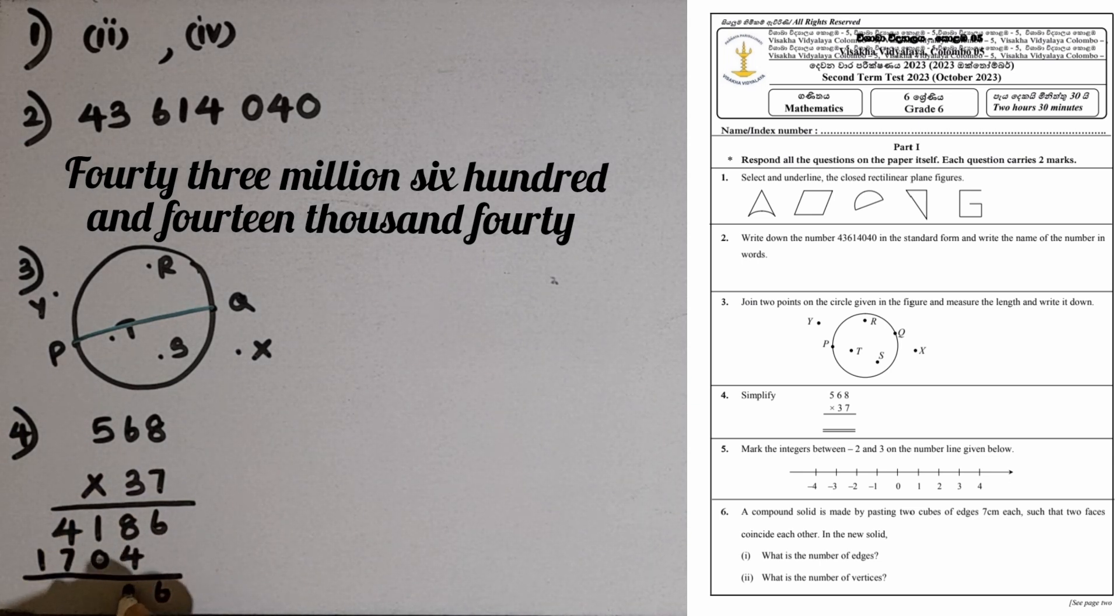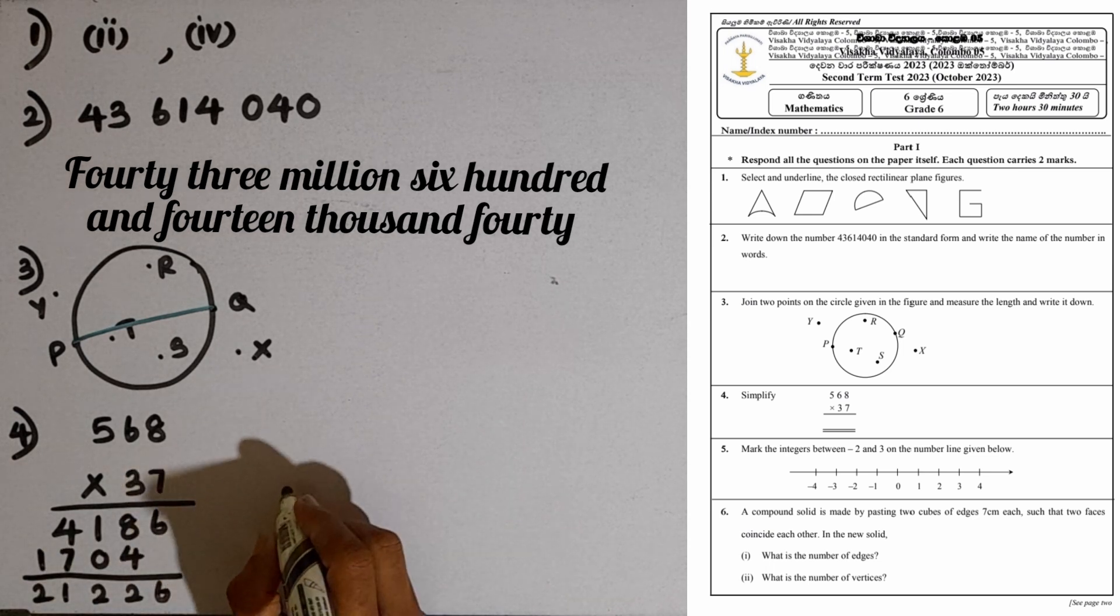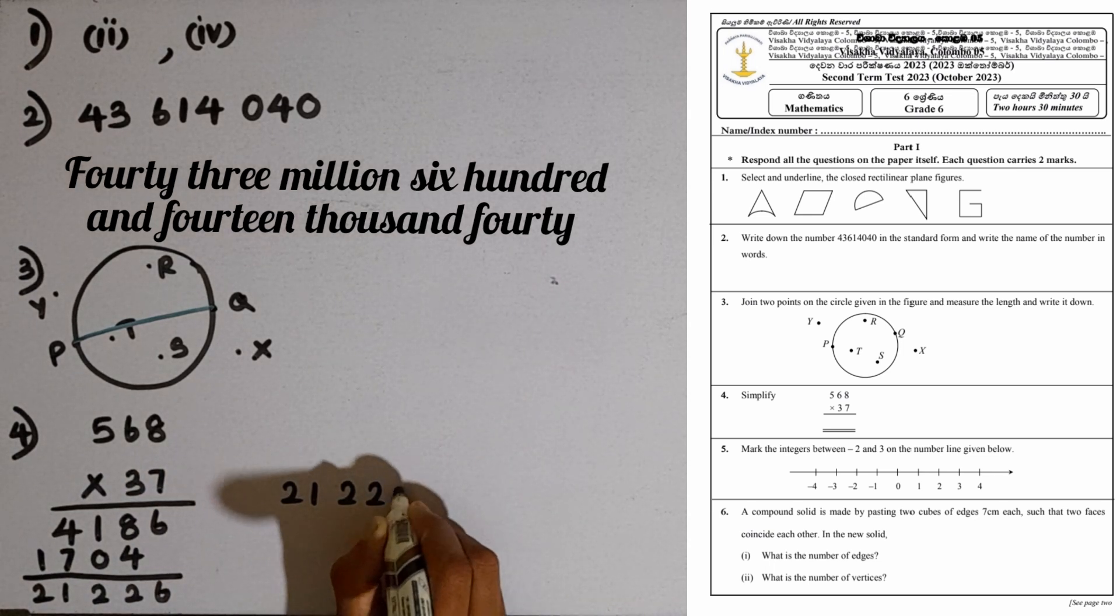Now we have to add these two numbers: 6, 12, 1 goes to the other side. 1 plus 1 is 2, 7 plus 4 is 11, 1 goes to the other side. The addition is 2. The answer is 21,026.